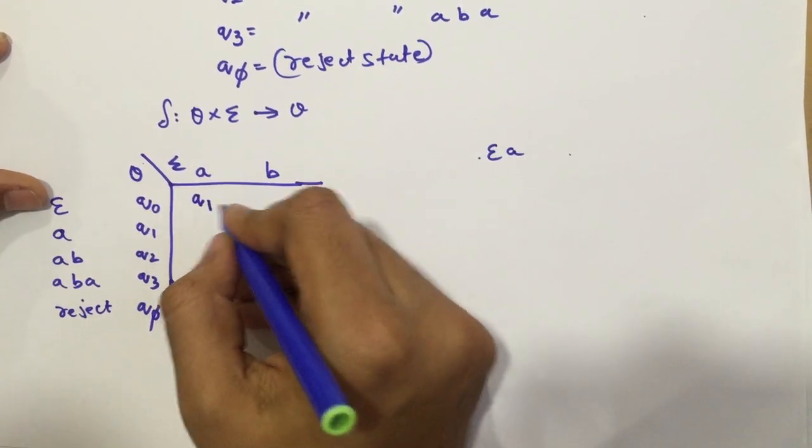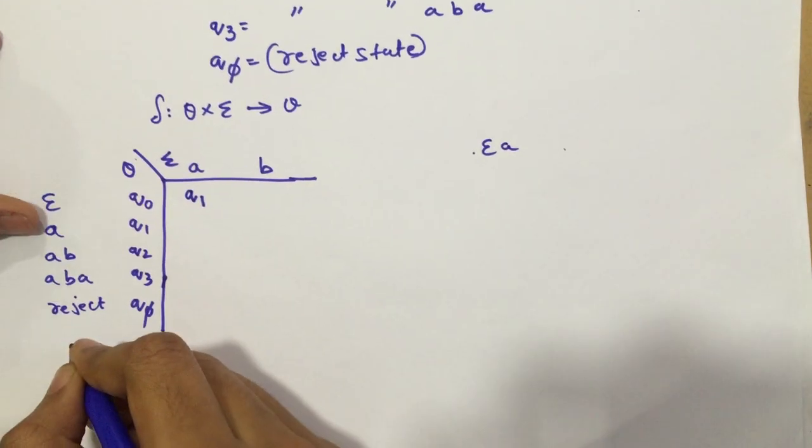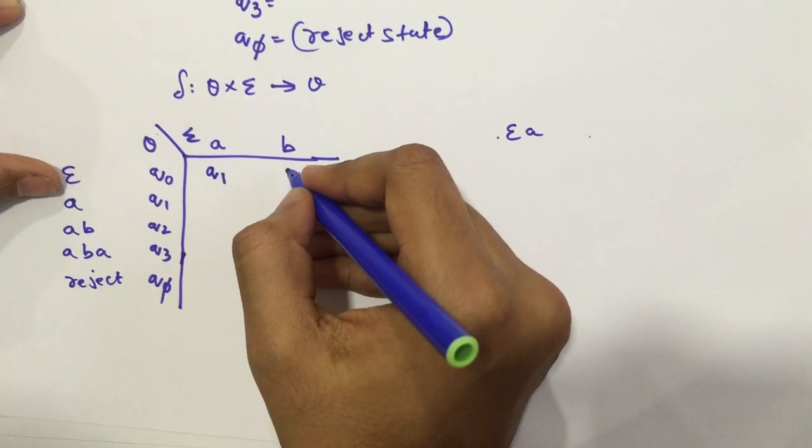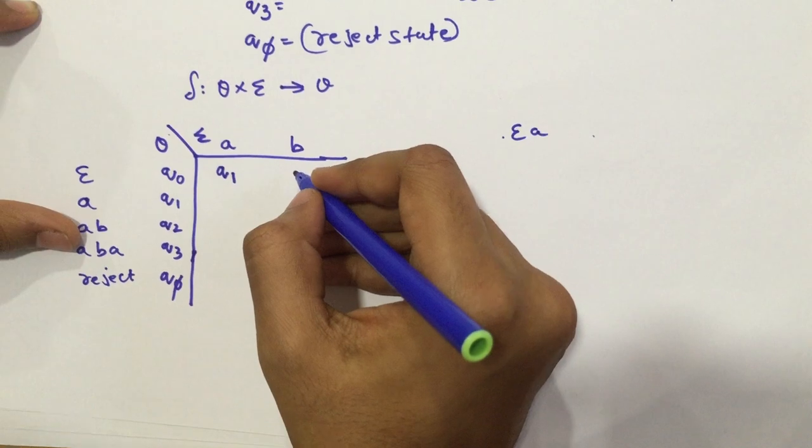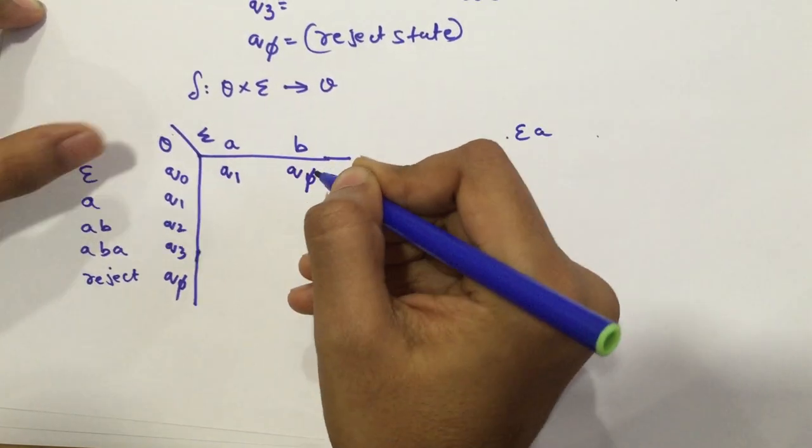Now, let's take B. Can we find B anywhere here? No, the string does not start with A or AB or ABA. So, we directly put it into the reject state, that is Q5.